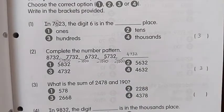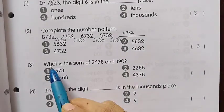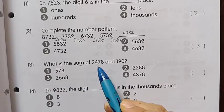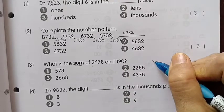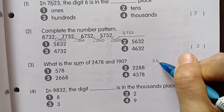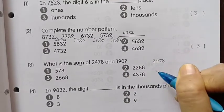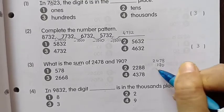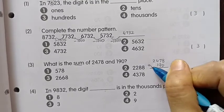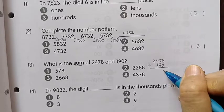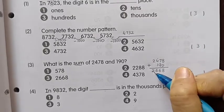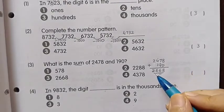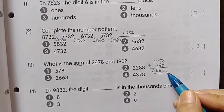Number 3: What is the sum of 2478 and 190? We add and we got the answer 2668. The answer is number 3.